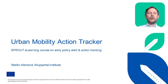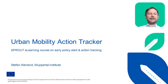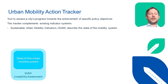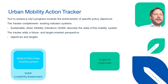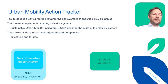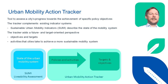Welcome to the presentation about the Urban Mobility Action Tracker. My name is Stefan Werland. I'm a researcher at the Wuppertal Institute for Climate, the Environment and Energy. The Action Tracker is designed as a tool to understand the purpose of cities in achieving mobility-related objectives and targets. It complements indicator systems such as sustainable urban mobility indicators by adding a future-looking policy dimension, looking at targets and objectives, but also at policy measures and activities that cities use or implement to achieve a more sustainable urban mobility system.